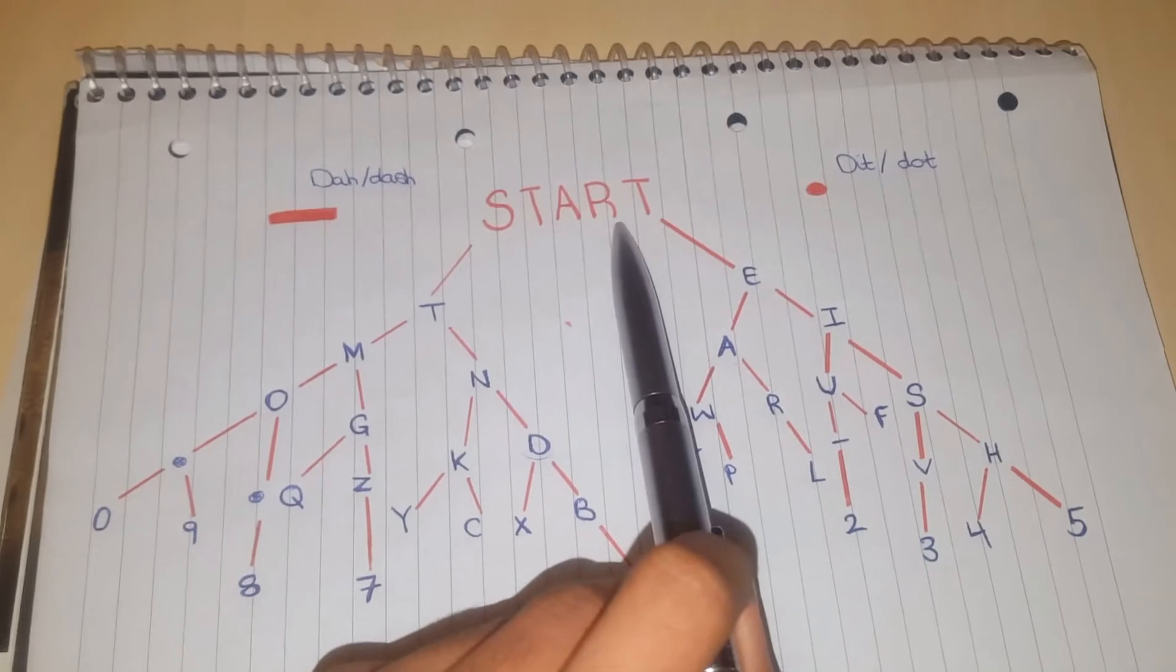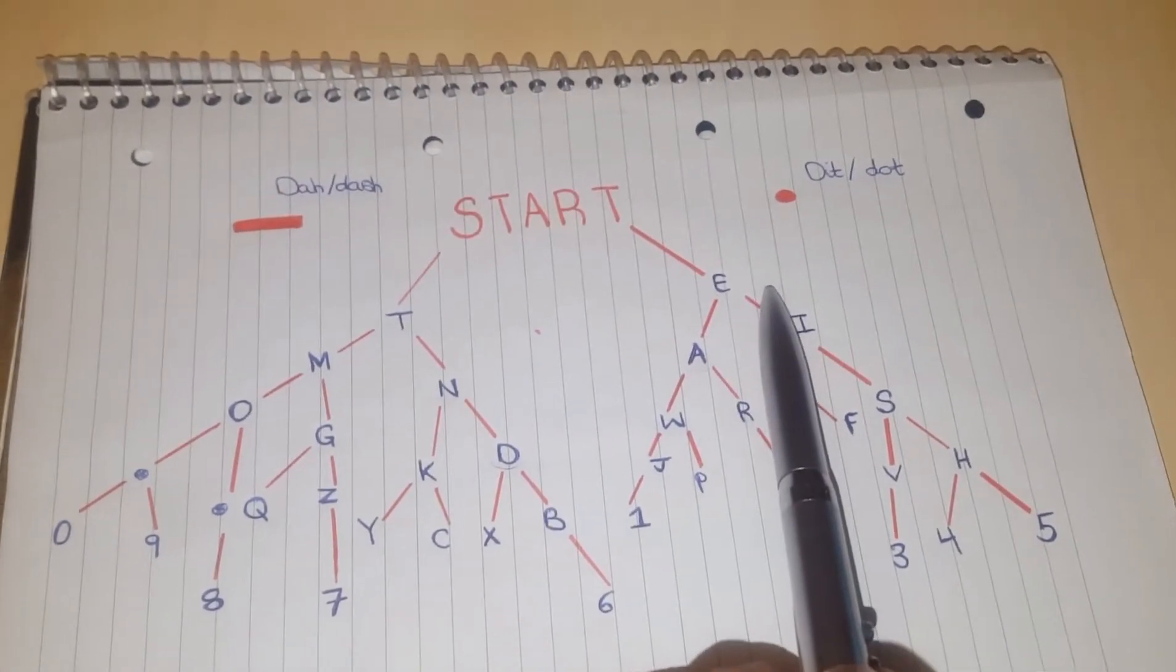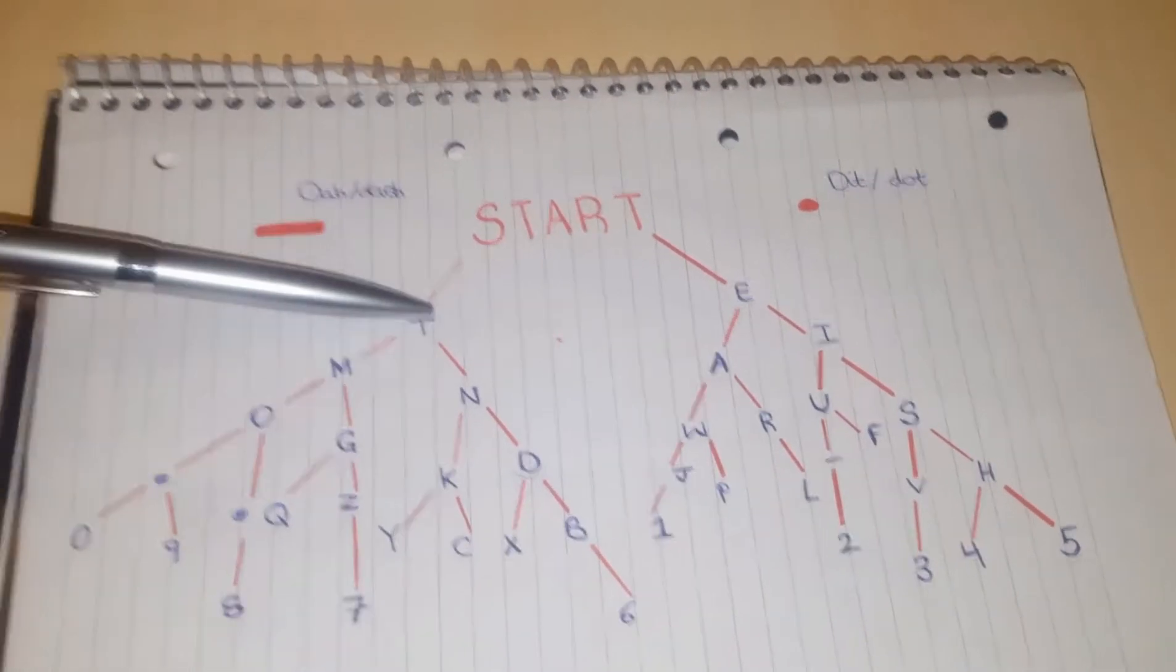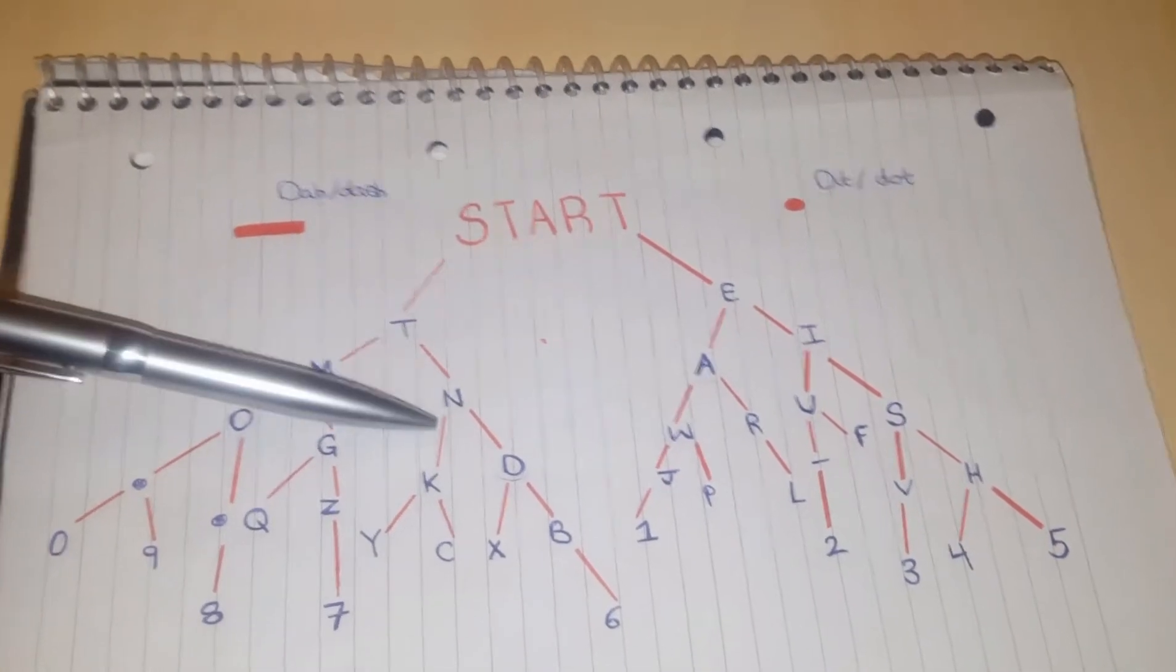So, you start off with dots on your right, and for every change in movement that you make, you turn into a dash. Whereas here, you start with a dash, for every opposite movement you make here, you turn into a dot.